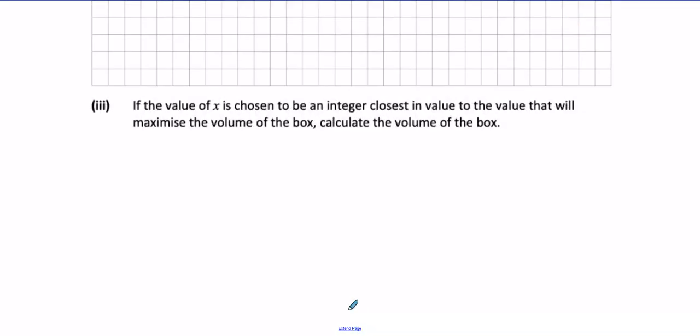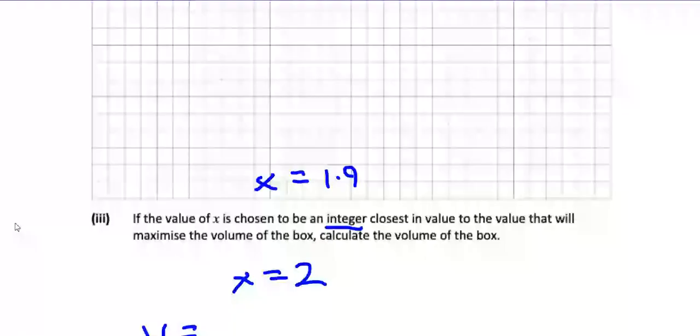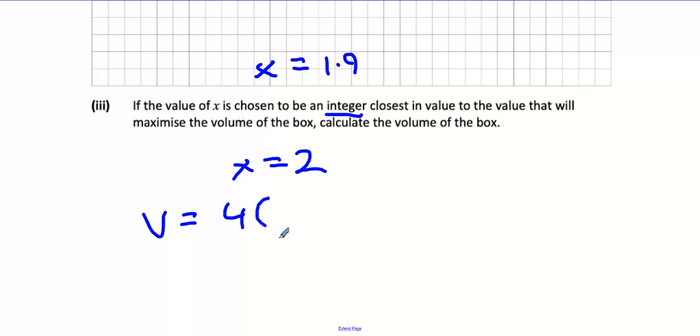If the value of x is chosen to be an integer closest in value to the value that will maximize the volume, calculate the volume of the box. So we got x equals 1.9. 1.9 is not an integer. What's the closest integer? Two. x equals 2. How do you get the value of the box again? What's the formula? 4x cubed minus 46x squared plus 130x.